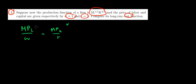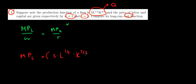We need the marginal products, and the marginal products are going to be the derivatives of the production function. This is our production function. First, we need the marginal product with respect to labor, meaning we're differentiating the production function with respect to labor. So this is the derivative with respect to labor — labor is the variable, everything else is a constant. We have 3 times k to the power 2/3 times l to the power 1/3, differentiating with respect to labor.